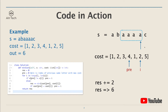For the last repeating 'a', we again add the smaller cost to res — we add two, and res becomes six, which is the final output. As you can see, the function of the pre pointer is to point to the maximum cost among the repeating letters, so we can add the smaller cost to res.